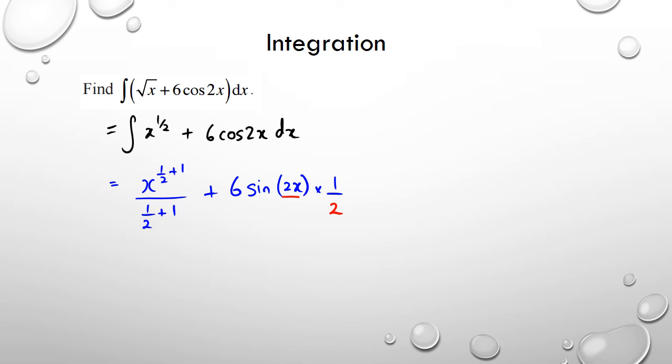What you then have is x to the power of 3 over 2, divided by 3 over 2, plus 3 sine 2x.